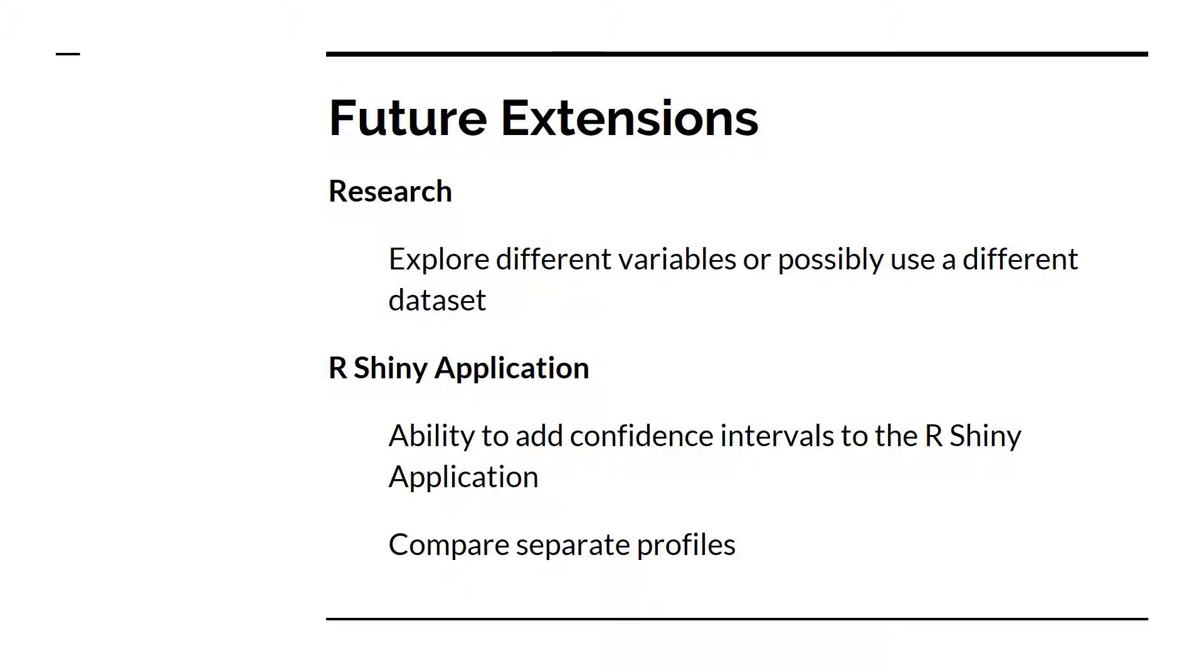Future extensions of this research include exploring variables other than age, sex, race, and poverty level to see how they affect the average BMIs of groups of individuals. Also, another idea is to use a different dataset other than IPUMS. As far as the R Shiny app, there are many ways to continue adding on features. It would be interesting to add confidence interval lines to the estimates to allow the user to see a range of values the average predicted BMI could take. Also, this app could be used for viewing two separate profiles to compare on one graph, which would allow for better individual comparisons.